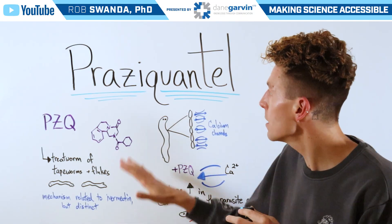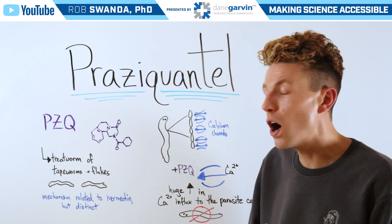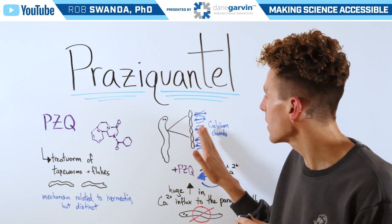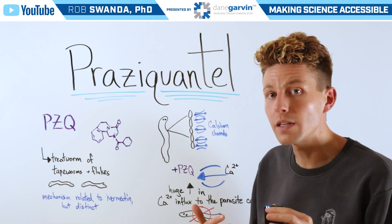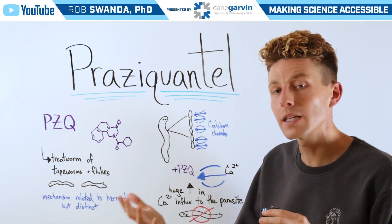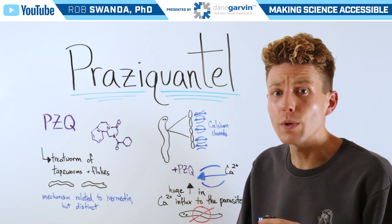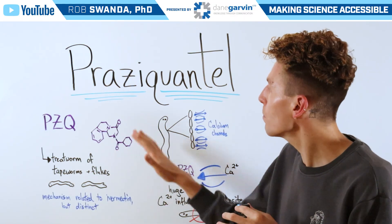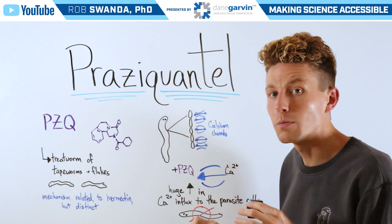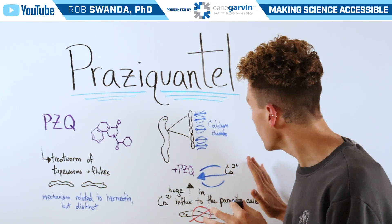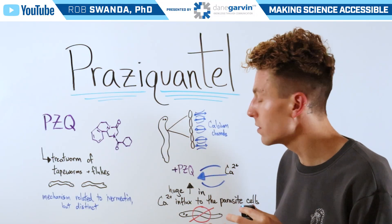The proposed mechanism of Praziquantel is targeting calcium channels on the parasite's cells. Calcium typically can move in and out of these channels and helps the parasitic cells with a variety of processes, but the main one is movement. When Praziquantel is added, it's actually able to open those calcium channels completely, allowing calcium to move into the parasite's cells.